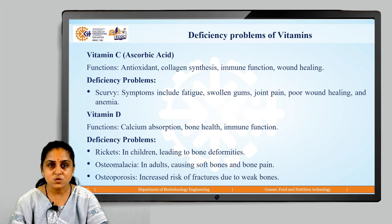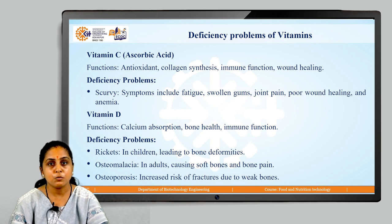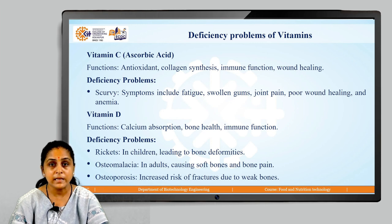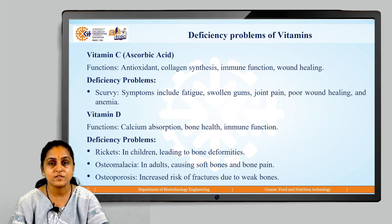Moving on to the next vitamin, which is vitamin C, also known as ascorbic acid. Functions of ascorbic acid include acting as an antioxidant, involvement in collagen synthesis, several immune-related functions, and wound healing processes. Deficiency of vitamin C leads to scurvy. The symptoms of scurvy involve fatigue, swollen gums, joint pain, poor wound healing, and anemia.